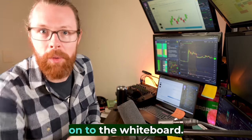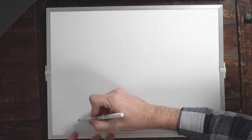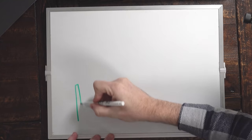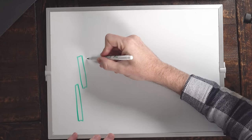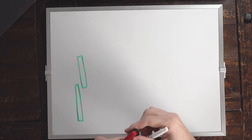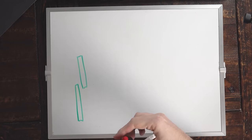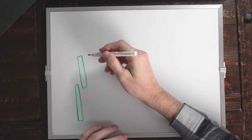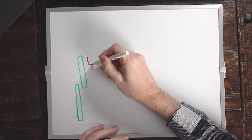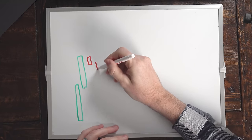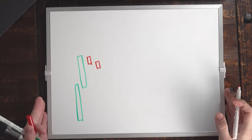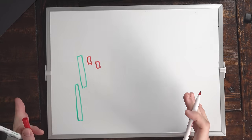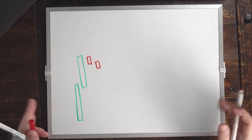Let me jump right on to the whiteboard. The ABCD pattern occurs when we have a strong move up — two candles is fine, could be more or less — and then we have a pullback. This pullback resembles essentially a bull flag, the standard bull flag pattern. It could be one candle pullback, two candles or more.